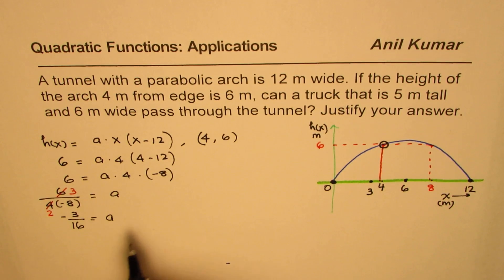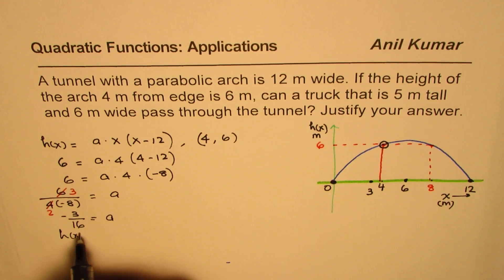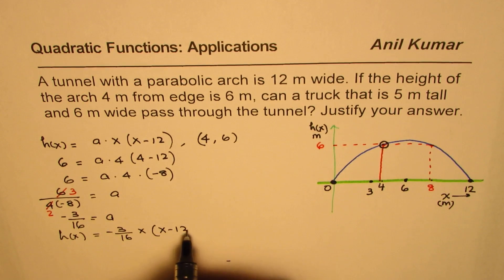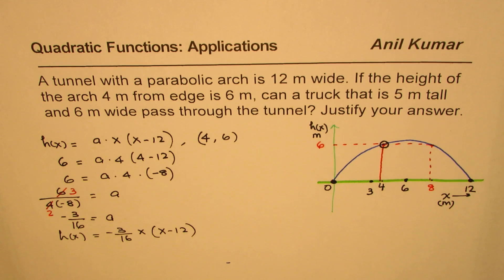So based on this, we can now write down the function h(x) as equal to minus 3 over 16, x times (x minus 12). So that is the equation for us.